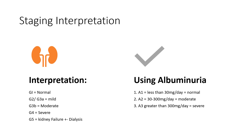For interpretation: G1 is normal, G2 and G3a represent mild kidney injury, G3b is moderate, G4 is severe, and G5 — where we are today — is end-stage renal disease, or kidney failure, requiring dialysis. Using albuminuria: A1 is less than 30 mg per day (normal), A2 is 30 to 300 mg per day (moderate), and A3 is greater than 300 mg per day (severe).